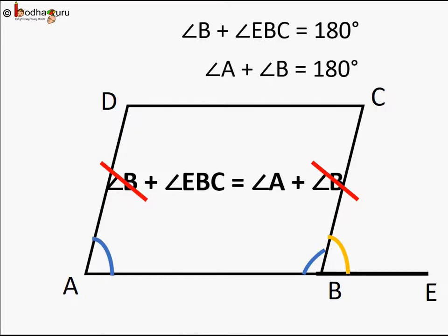Here, AE acts as a transversal for the pair of lines AD and BC, and we just proved their corresponding angles are equal — angle EBC = angle A. This means we can say AD is parallel to BC.